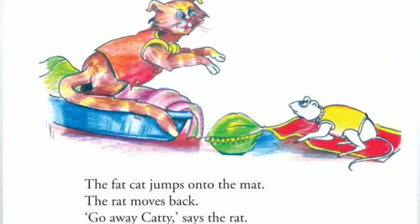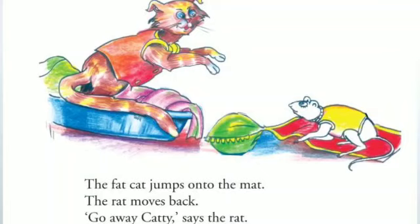Look at the next picture. What is the cat doing? It is jumping. The fat cat jumps onto the mat. The rat moves back. 'Go away, catty,' says the rat. You know, the rat is also food for the cat. So when Immy went outside, the cat jumped over towards the rat, trying to catch it. Who jumps onto the mat? The cat. What does the rat say? 'Go away, kitty.'